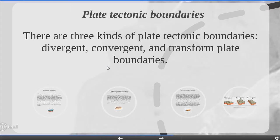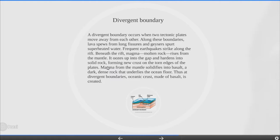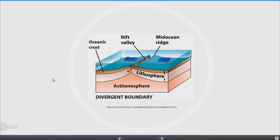Plate tectonic boundaries. There are three kinds of plate tectonic boundaries: divergent, convergent and transform plate boundaries. A divergent boundary occurs when two tectonic plates move away from each other. Along these boundaries, lava spews from long fissures, geysers spurt superheated water, and frequent earthquakes strike along the rift. Beneath the rift, magma rises from the mantle, wells up into the gap and hardens into solid rock, forming new crust on the torn edges of the plates. Magma from the mantle solidifies into basalt that underlies the ocean floor; thus at divergent boundaries, oceanic crust made of basalt is created.